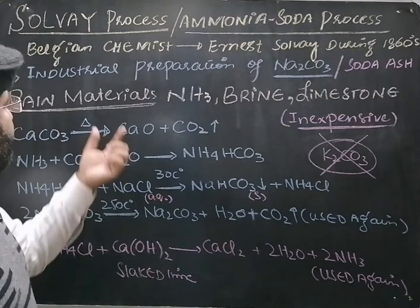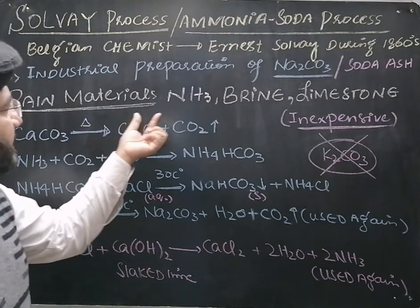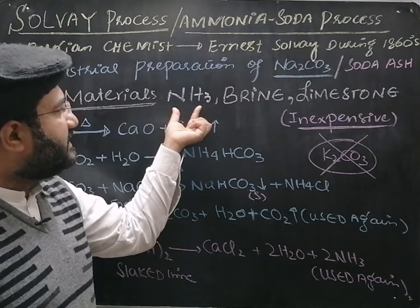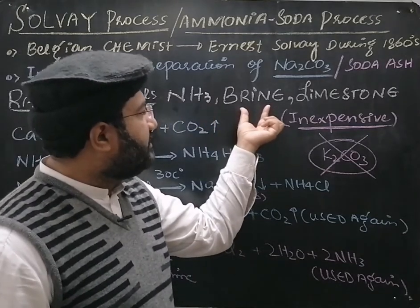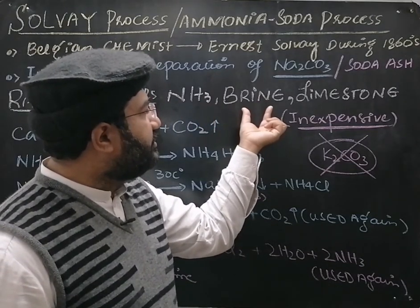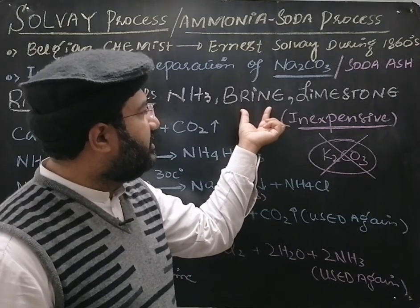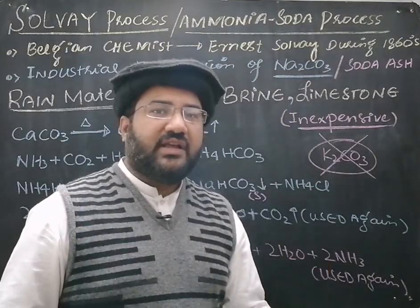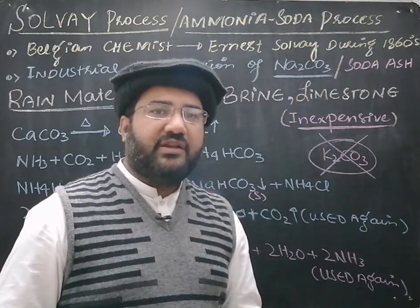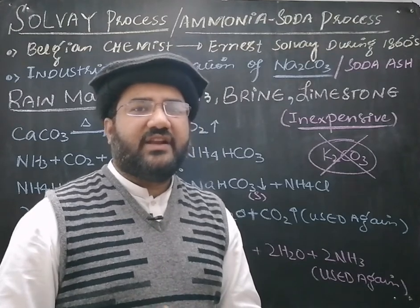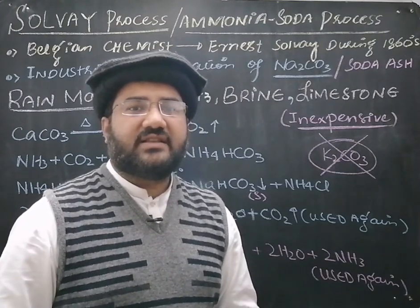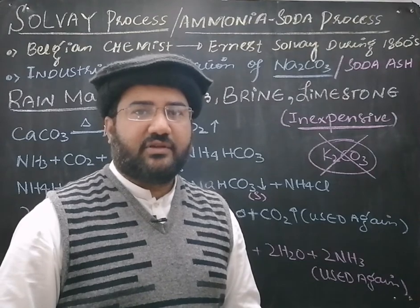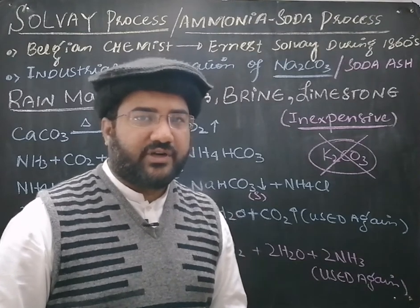The raw materials used in the Solvay process are: ammonia produced by the Haber's process, brine which is a concentrated aqueous solution of sodium chloride, and limestone which is calcium carbonate. These raw materials are very inexpensive, which is why it is the most commonly used industrial method for the preparation of sodium carbonate.